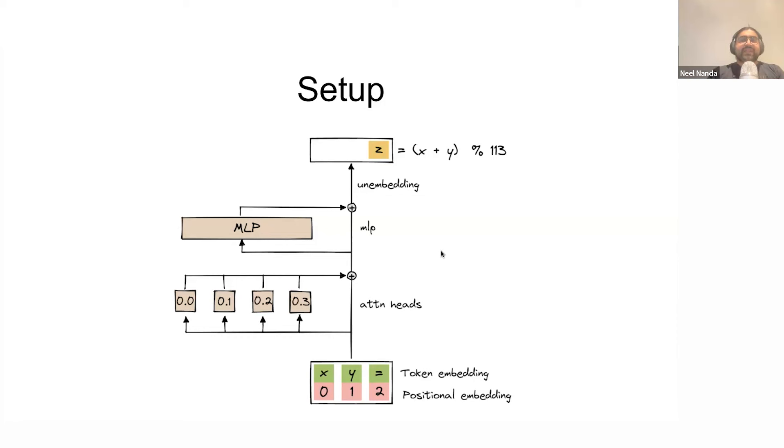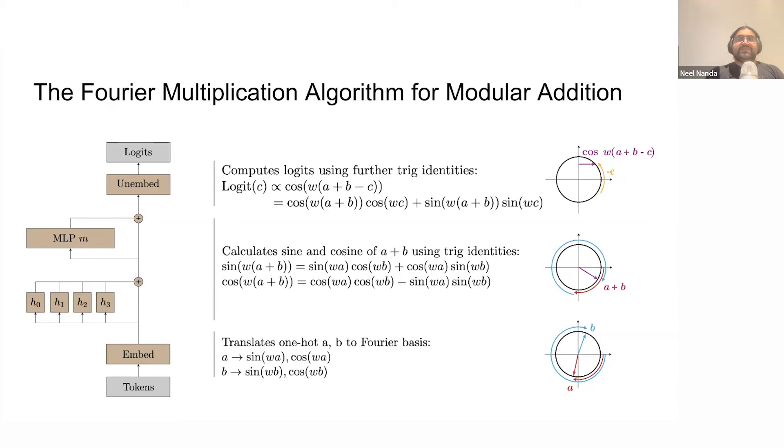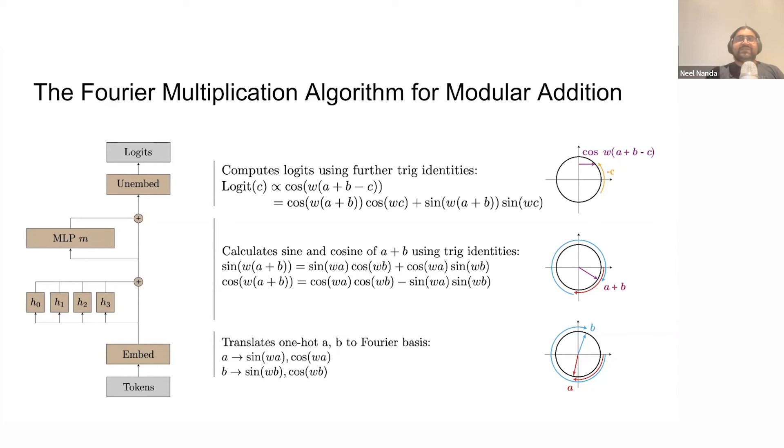So the setup of this problem is we have a one-layer transformer. The architecture looks something like this, but you don't need to know the details of transformer architectures to follow this bit. And we train it to do modular addition. We give it a pair of inputs that are integers between 0 and 112 inclusive. Each of these are one-hot encoded, and the output is a single number z that tries to be x plus y mod 113. And we train this model with a cross entropy loss, and I then try to reverse engineer how it does it.